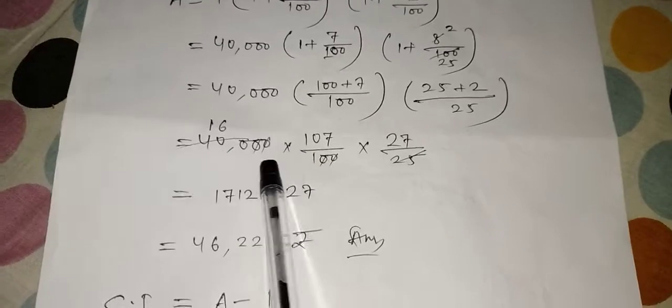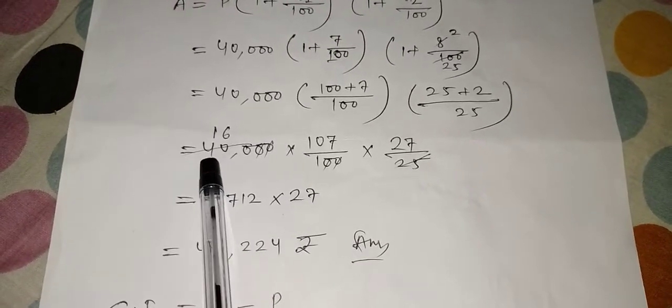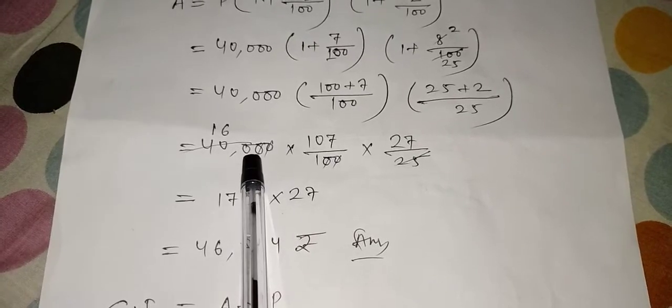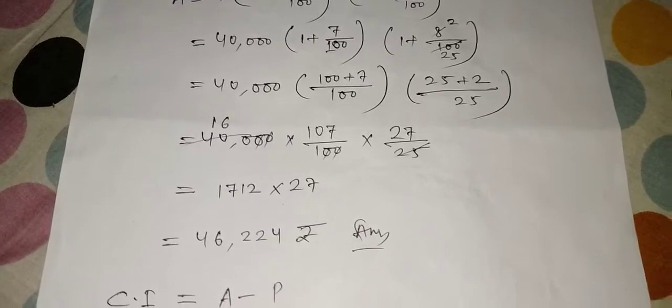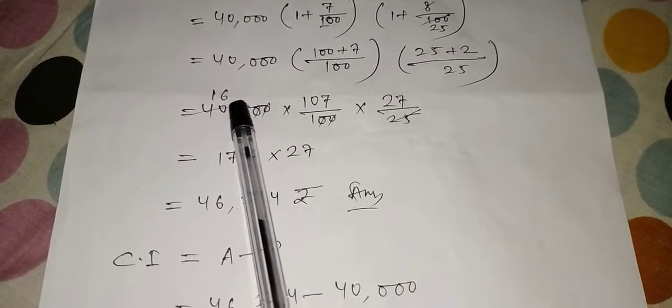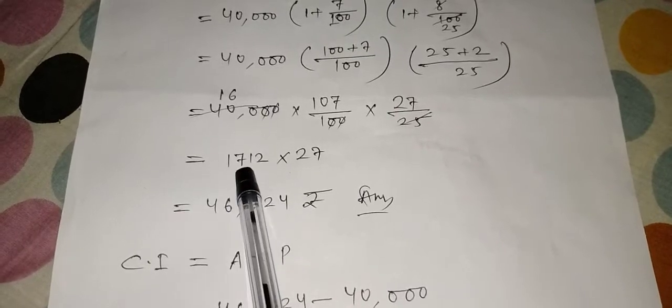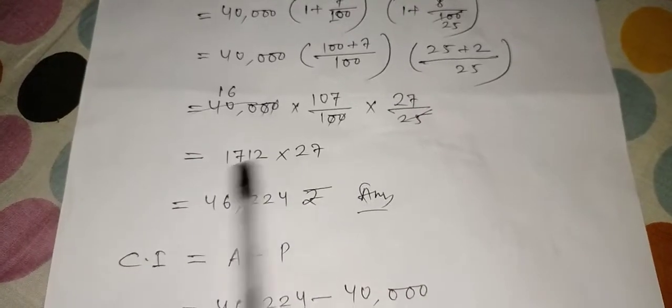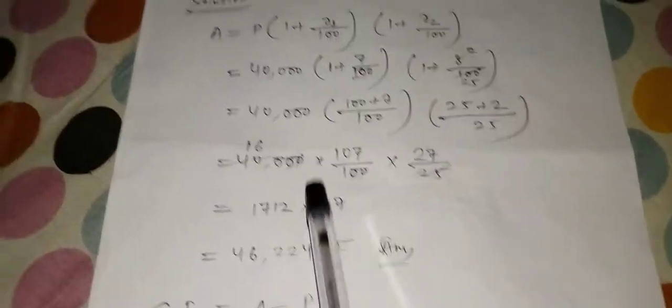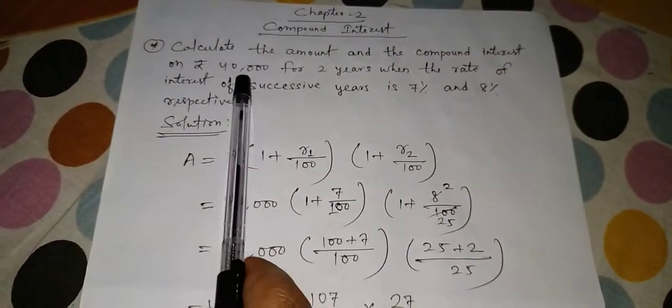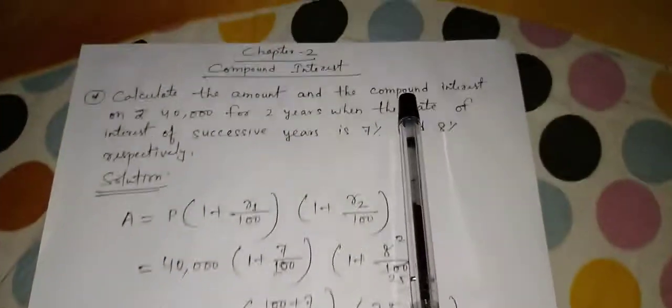That is you add 107, 107/100 × (25 + 2 is 27)/25. Now this two zeros and these two zeros you cancel. 400 remains. 400 you cancel with 25. 25 ones are 25, 16 remains, 15 and 10, 50, 150. 25 sixes are 150. Finally we get 16. Now when we multiply 16 and 107, our result is 1712 × 27, and our final answer is 46,224.